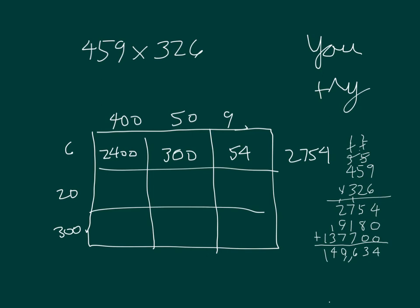Next you had 20 times 400 which is 8,000, 1,000, and 180. Adding those together you get 9,180.